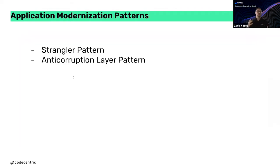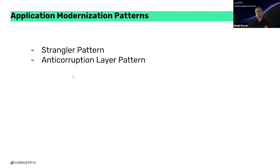When thinking about modernization steps, we always think in patterns. For application modernization we talk about the strangler pattern, or we use an anti-corruption layer pattern to avoid problems with the data. These are the key patterns that come up in application modernization as part of cloud native.